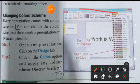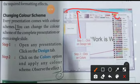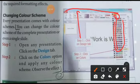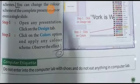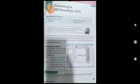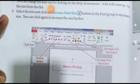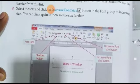Yahan pe jo upar wali patti hai usme Design tab milega. Design tab mein jaane ke baad Colors mein click karna hai. Wahan pe aapko bahut saare colors dikhaai denge. Jo color aapko select karna hai, yahan se select kar sakte hain. Is tarike se hum color scheme ke taur par color change karte hain.